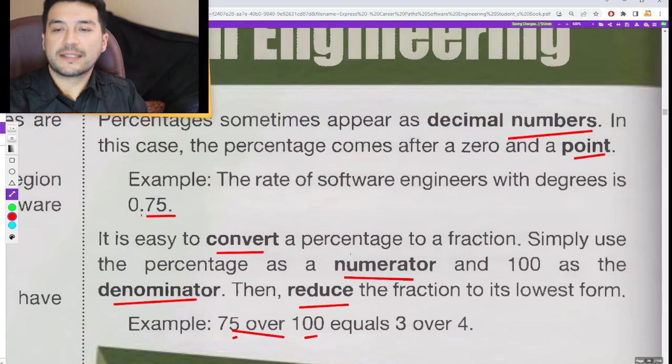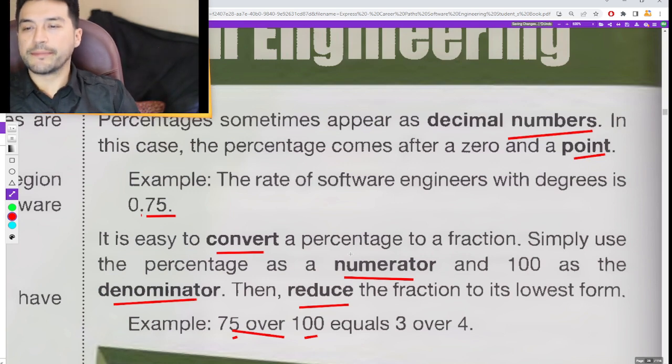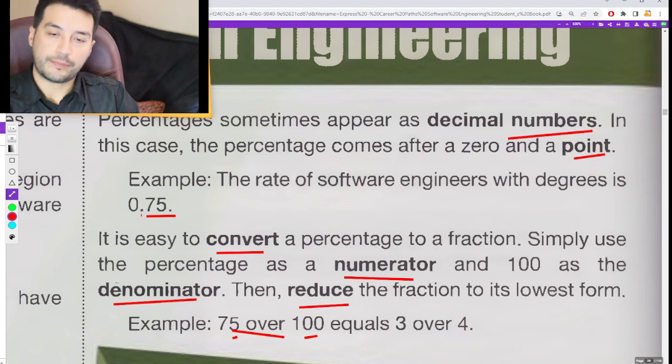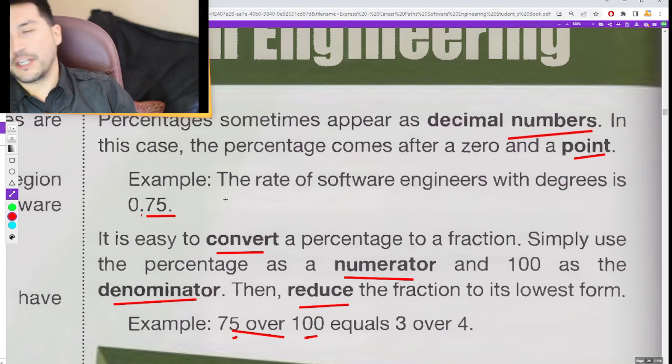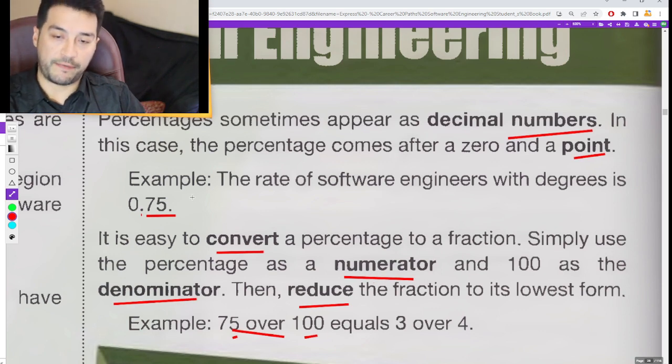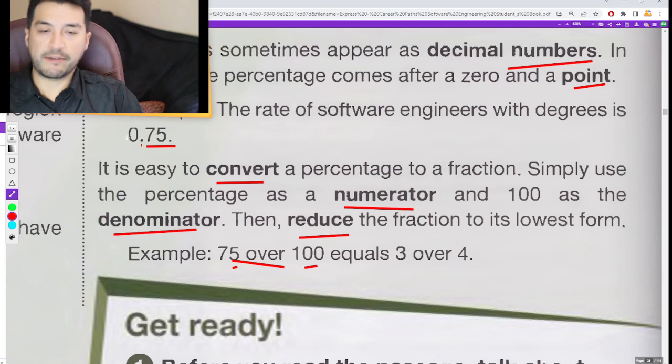Percentages sometimes appear as decimal numbers. In this case, the percentage comes after a zero and a point. Example: The rate of software engineers with degrees 0.75.